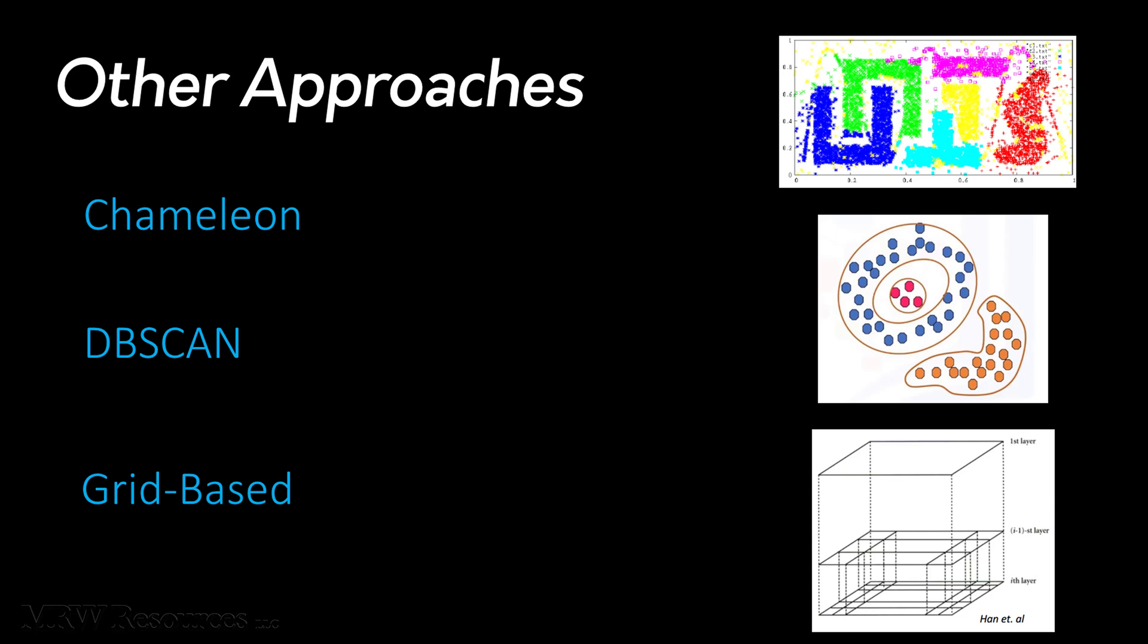DBSCAN is another approach. It stands for density-based spatial clustering of applications with noise. That's another one that's agglomerative in nature. DBSCAN, as it turns out, is actually one of the most common clustering algorithms in use today, and it's also widely cited in the scientific literature.